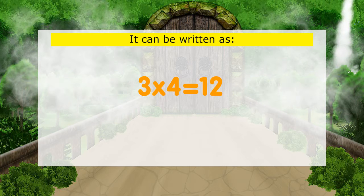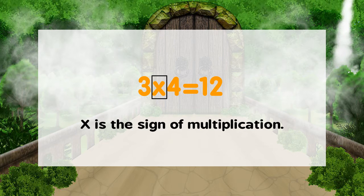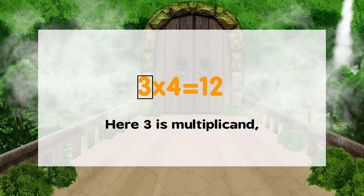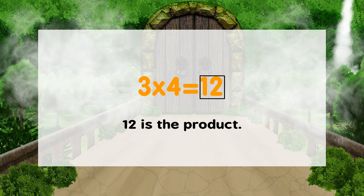It can be written as 3x4 equals 12. We read it as 3 multiplied by 4 is equal to 12. X is the sign of multiplication. Here, 3 is the multiplicand, 4 is the multiplier, and 12 is the product.